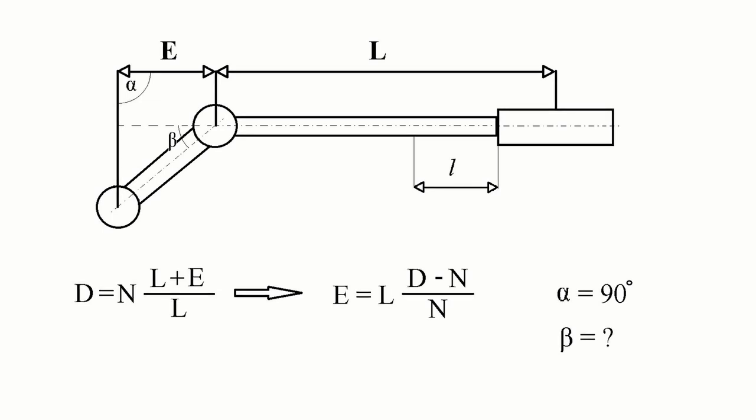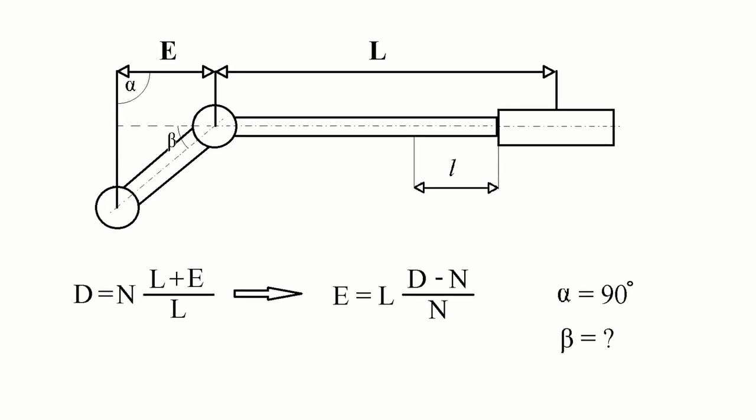In this case, if we will set the extension at 90 degrees to the axis of the wrench, our E will be zero. And we deliver torque value D equal to the torque value set on the wrench, N.